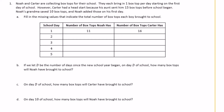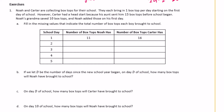Exercises. Noah and Carter are collecting box tops for their school. They each bring in one box top per day, starting on the first day of school. However, Carter had a head start because his aunt sent in 15 box tops before school began. Noah's grandma saved 10 box tops, and Noah added those on the first day. So Carter starts out with 16 because he brings one the first day and his aunt gave him 15. Noah had 10 plus the one he got on the first day. Every single day, they each add one box top to their total.